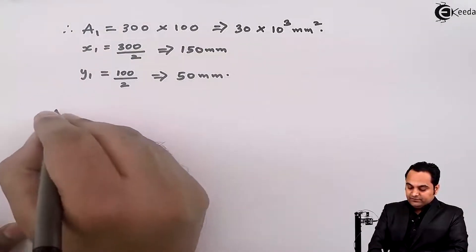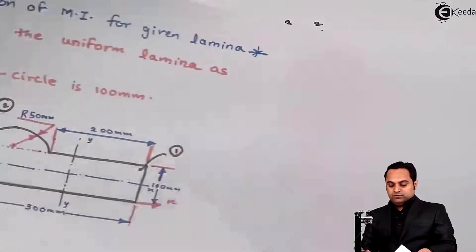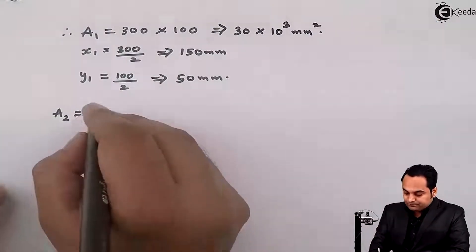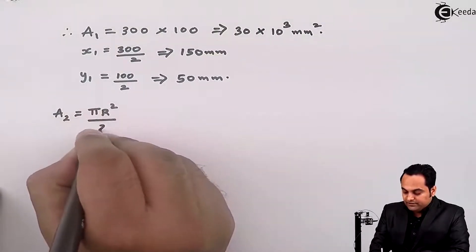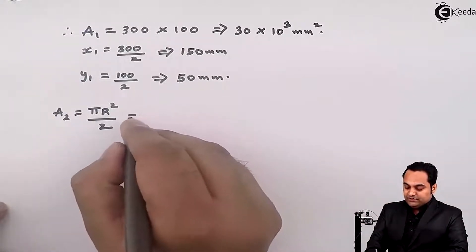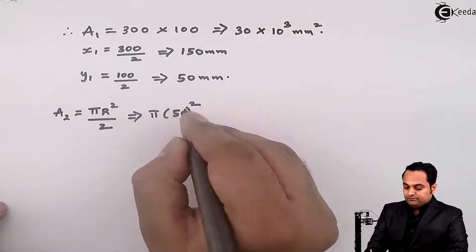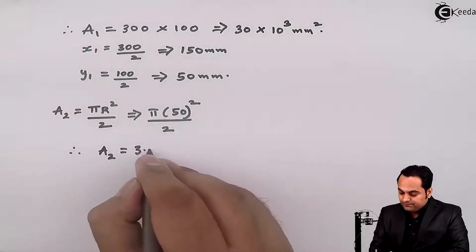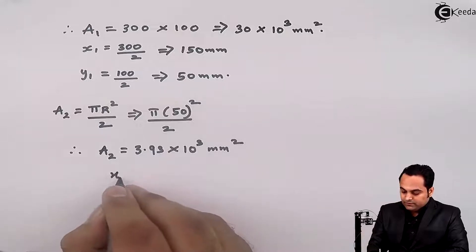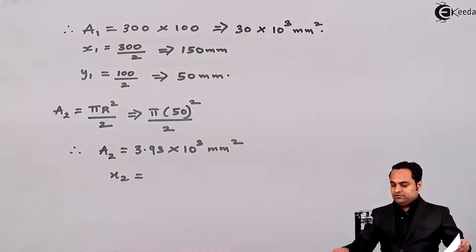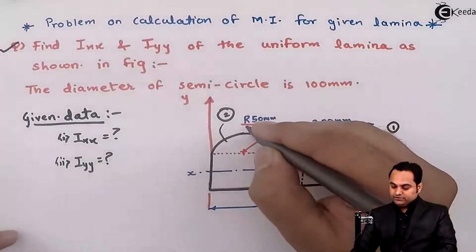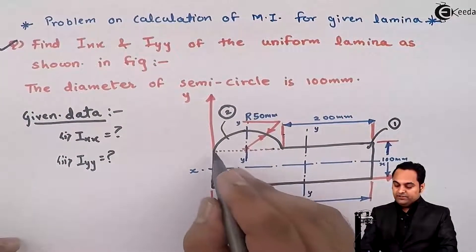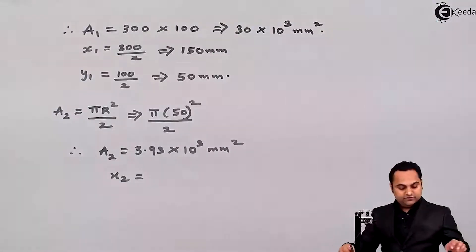For the semicircle, area A2 = πr²/2. With radius 50 mm, A2 = 3.93 × 10³ mm². x2 is the location of the y-axis for the semicircle, which passes through the center at 50 mm from the reference y-axis, so x2 = 50 mm.